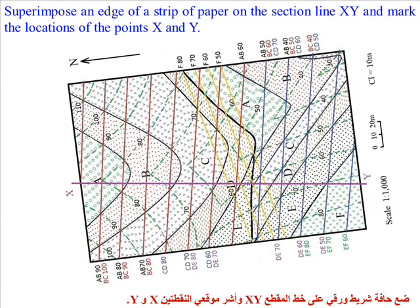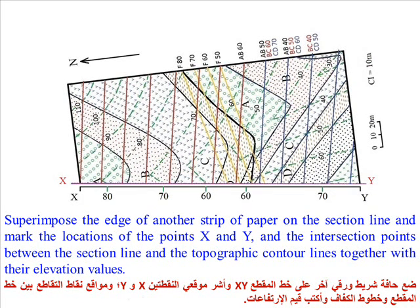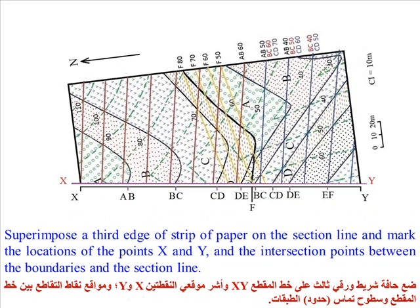Superimpose an edge of a strip of paper on the section line XY and mark the locations of points X and Y. Mark the intersection points between the section line and each strike line, and write the three strike line values for each boundary. On a second strip, mark X, Y, and the intersection points between the section line and topographic contour lines with their elevation values. On a third strip, mark X, Y, and the intersection points between the boundaries and the section line.